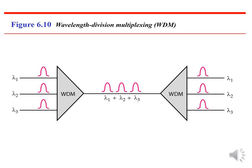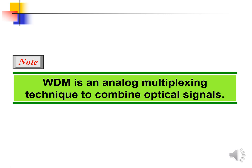Next comes wavelength division multiplexing. WDM is designed to use the high data rate capability of fiber optic cable. The optical fiber data rate is higher than that of metallic transmission cable, but using fiber optic cable for a single line wastes the available bandwidth. Multiplexing allows us to combine several lines into one. We have three different wavelengths W1, W2, and W3, which are combined as W1+W2+W3 on the link. At the demultiplexer side, we get back W1, W2, and W3. WDM is an analog multiplexing technique to combine optical signals.